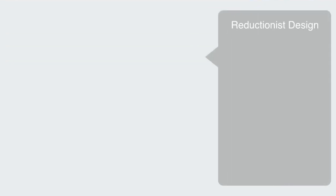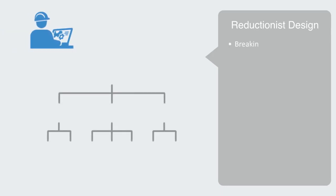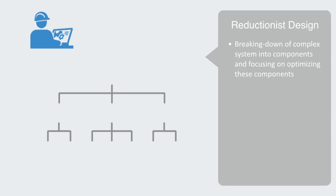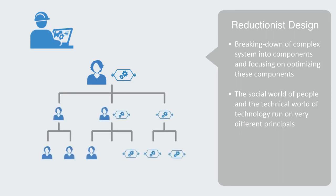Our traditional design and engineering practice is based upon the use of reductionism, which involves the breaking down of complex systems into components and focusing on optimizing these components in isolation. The social world of people and the technical world of technology run on very different principles, and often the first stage in breaking a system down is the division between people and technology. So let's first think about how these two domains differ in their nature.